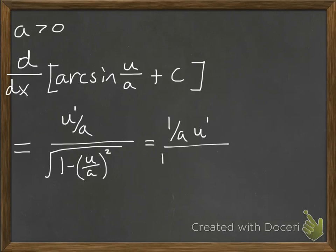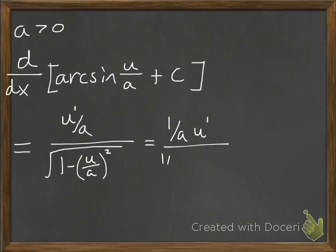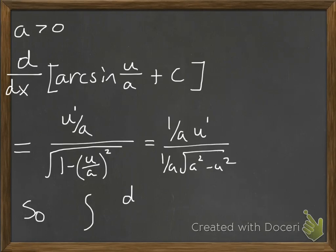Rewriting: U prime over A is 1 over A times U prime. Then in the square root, we pull out 1 over A squared. When we pull 1 over A squared out of the square root, it just becomes 1 over A — because A is positive, we don't need absolute value bars. And then we have A squared minus U squared.